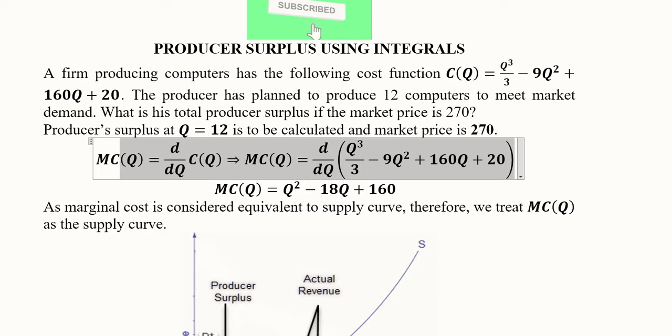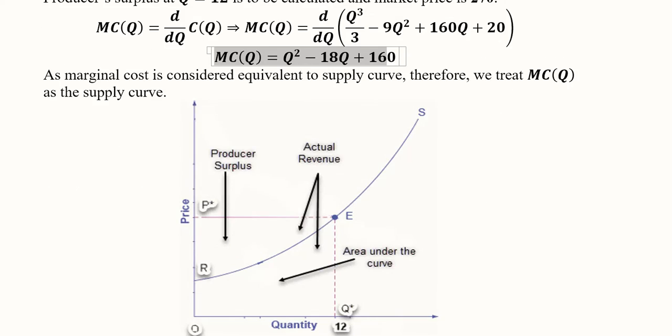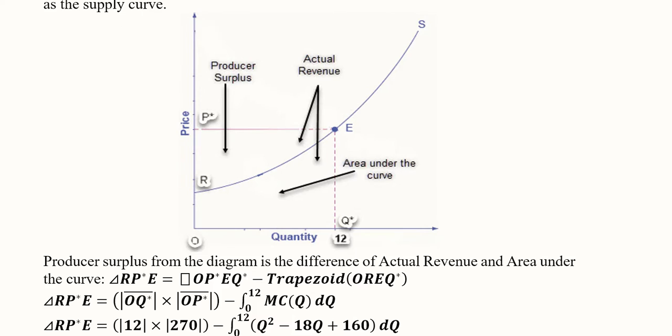This is something that we have been doing before. The calculation gives us the marginal cost which is equal to this, and now we can consider this marginal cost function as the supply curve because as per the theory we know that it is equivalent to the supply curve.